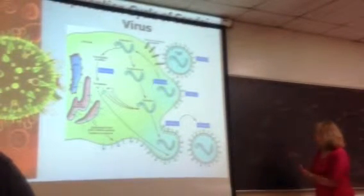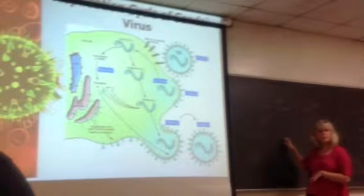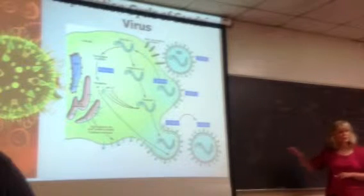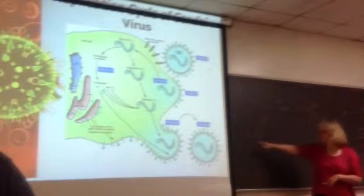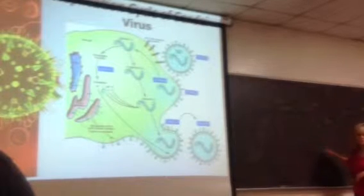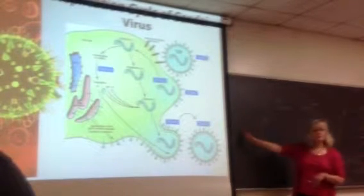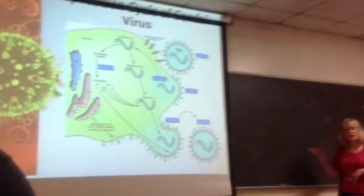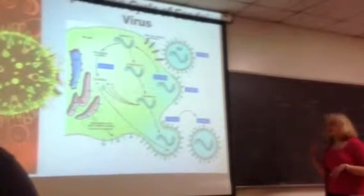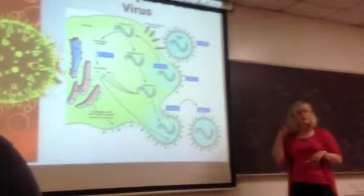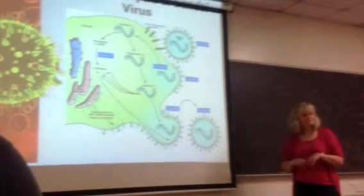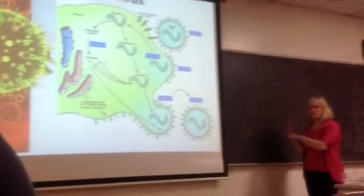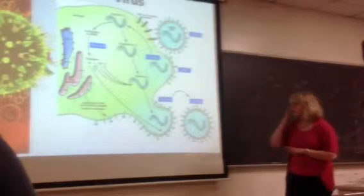That happens every time the polymerase hits one of these intergenic regions. If it continues on, it'll hit the next intergenic region and the same thing happens. So if you look at the amount of protein produced for each gene, there's a gradient of decreased amounts of protein produced from those genes at the 3' end to those at the 5' end. The last protein is the L protein — it's an enzyme, and you don't need a lot of it because it just keeps going and going. That's a little about how it makes monocistronic messenger RNAs.